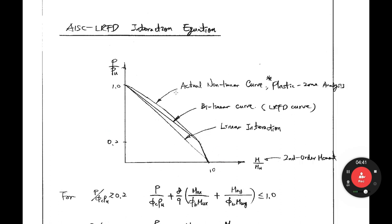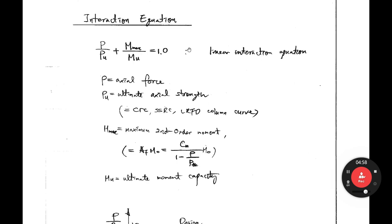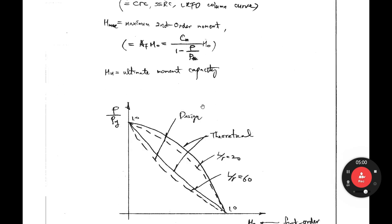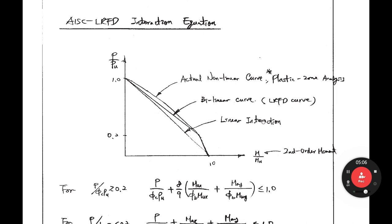From the linear interaction equation concept, the AISC LRFD interaction equation has been developed. This equation can be drawn as a straight line — pure linear interaction from point to point: P/PU plus M/MU equals 1.0. The AISC LRFD interaction equation has been developed on the basis of this linear interaction equation.